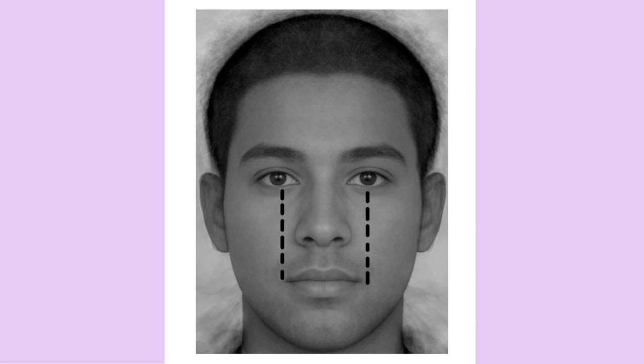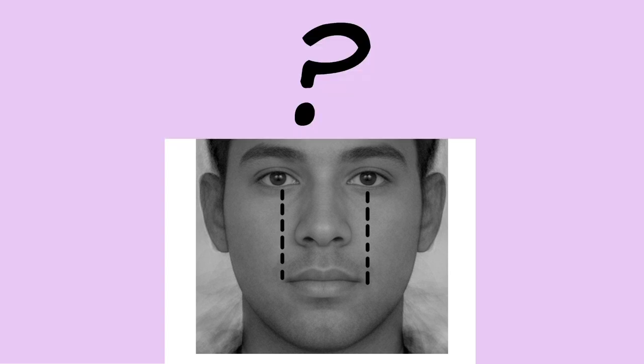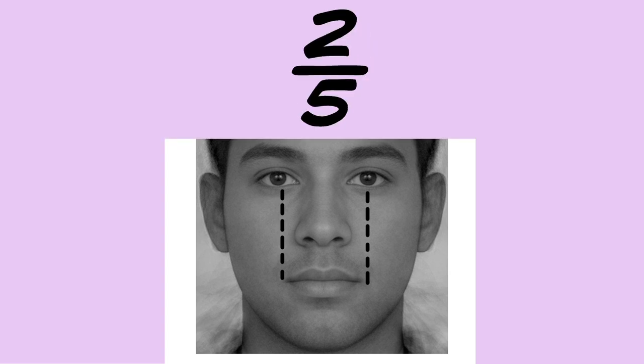If there are two eyes and there's room for five, what's the fraction? Two-fifths. My eyes take up two-fifths the width of my head.